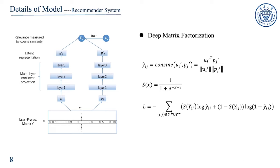In addition, to meet our requirements, we modified the loss function of the original model. We map Y_ij to between 0.5 and 1 through the sigmoid function. In this way, we can avoid the error caused by large differences in ratings in the user-project matrix.